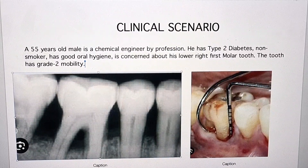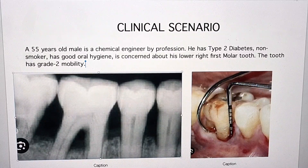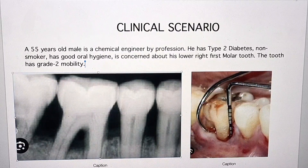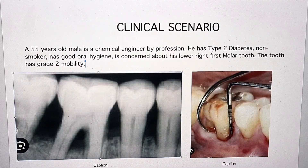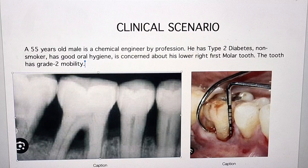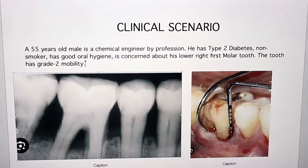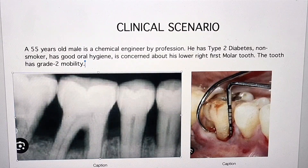Yes, it is a periapical radiograph with grade 2 quality showing lower right 4, 5, 6, 7. There is horizontal bone loss of around 50 to 70%, and there is an interradicular radiolucency in lower right 6, which suggests involvement of grade 3 furcation, but I will confirm it clinically. Initially I will provide the patient with oral hygiene instructions — correct use of toothbrush, interdental brushes, mouthwash — and I will control the risk factor as the patient has type 2 diabetes. Then I will give non-surgical periodontal therapy including supra and subgingival debridement of pockets of 4 mm and above with LA, and review after 6 to 8 weeks.